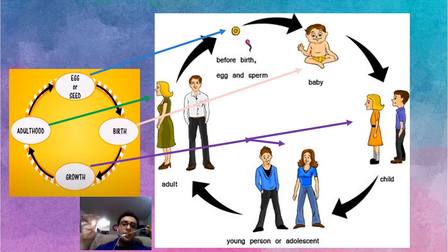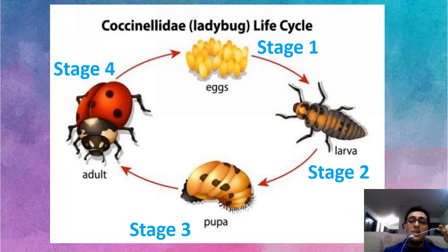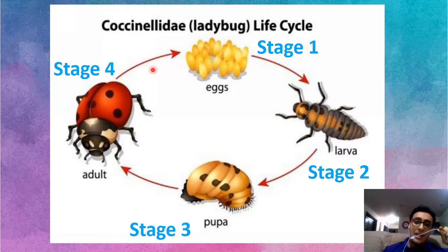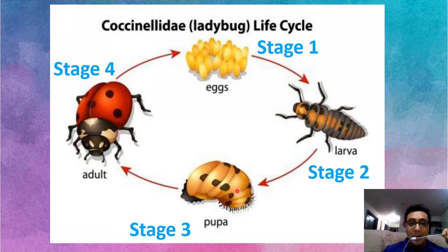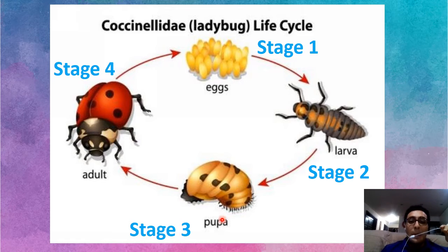Most animals have only four stages. Some animals have three stages, and some have more than four. Let's look at ones with four stages. The first example is the ladybug. After stage two, it grows up and goes into a little tiny bag called a pupa. It sleeps in the pupa and then comes out as an adult ladybug.